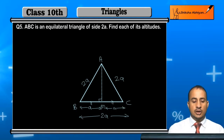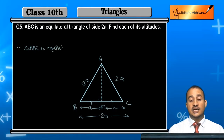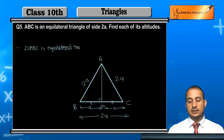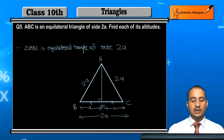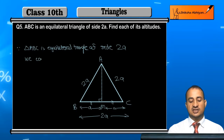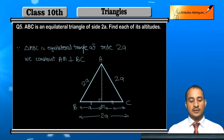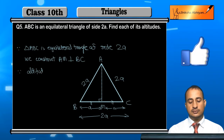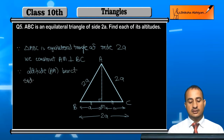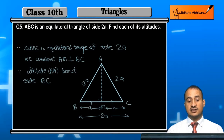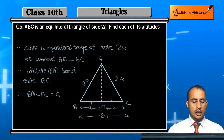Since triangle ABC is an equilateral triangle of side 2a, and we constructed AM perpendicular to BC — since the altitude AM bisects side BC — therefore BM is equal to MC, which is equal to a.